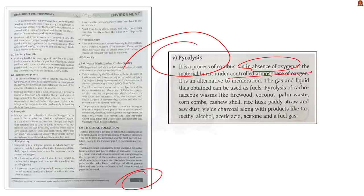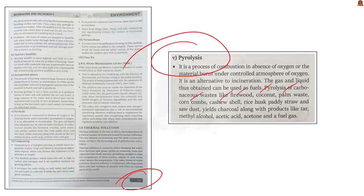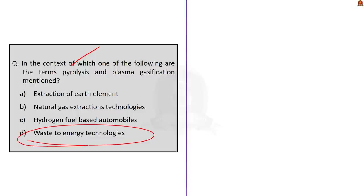Pyrolysis is a process of combustion in the absence of oxygen, or where material is burnt under a controlled atmosphere of oxygen. The gas and liquid obtained through pyrolysis can be used as fuels. During pyrolysis, we burn organic materials or carbonaceous waste — substances which contain carbon. We take organic waste like firewood, coconut, palm waste, corn cobs, cashew shells, rice husk, paddy straw, and sawdust. We burn these substances in the absence of oxygen or in a controlled atmosphere of oxygen.